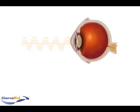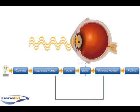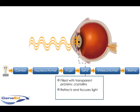After passing through the cornea, aqueous humor, and pupil, light progresses through the lens — a multilayered collection of cells filled with transparent proteins called crystallins. The lens refracts and focuses light.